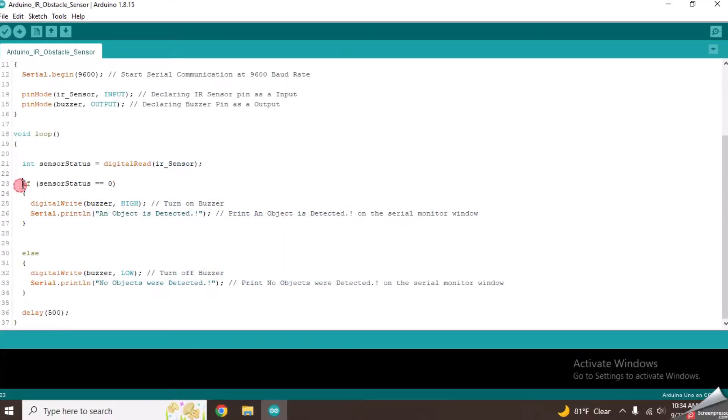So if the sensor outputs a low signal, it will check that from this if condition and execute these two lines. From this line, it will turn on the buzzer. This line will print an object is detected message on the serial monitor.